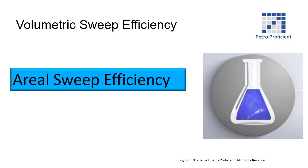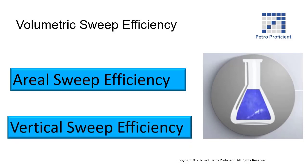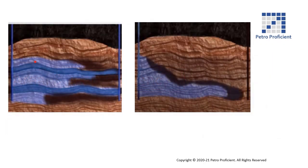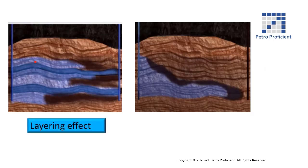Volumetric sweep efficiency is a product of the aerial and vertical sweep efficiency. The illustration shows the factors affecting the water flooding process. The permeability of the rock is not uniform, and water tends to flow through those layers having higher permeability. This is called the layering effect.